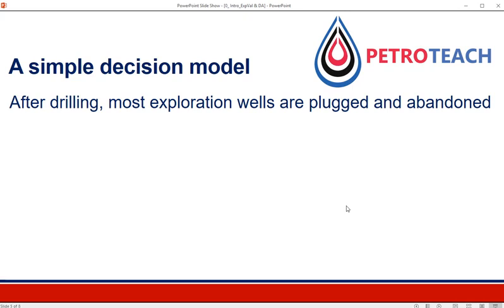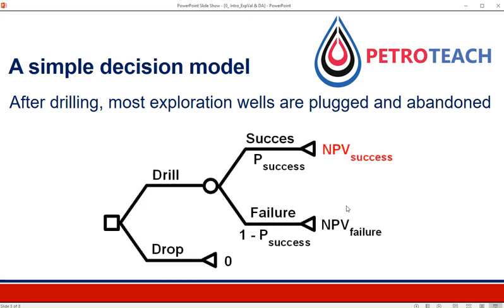We usually use a decision tree model to evaluate the information that comes from an exploration well. In this decision tree model, we have a decision shown by a square node, and we could either drill or walk away from this opportunity. If we walk away, the outcome is zero. If we drill, there is uncertainty about success or failure.